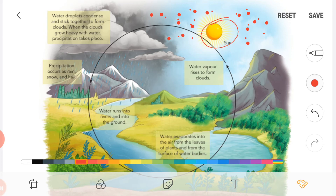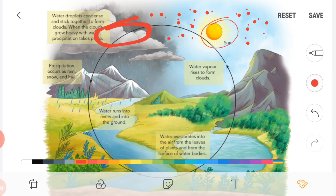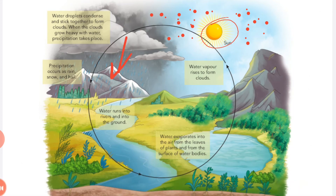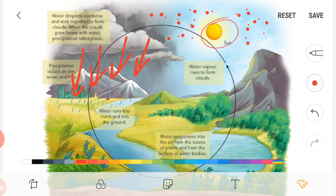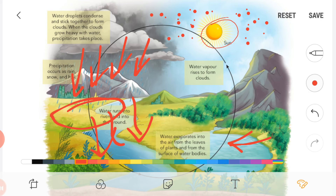The water droplets attach to dust particles and form clouds. When all the water droplets in the cloud join together, the cloud becomes heavy. A heavy cloud then starts to precipitate — that means rainfall — and again falls on the surface of the earth, filling rivers and ponds. This is the process of the water cycle.